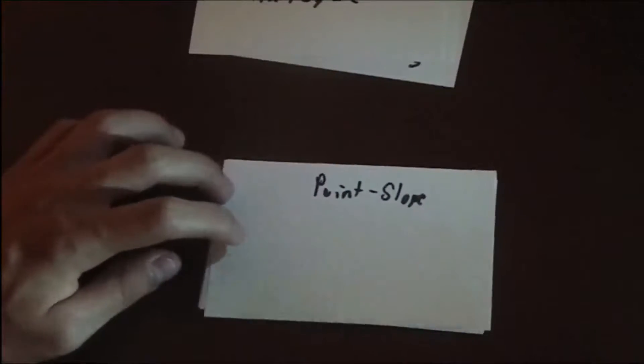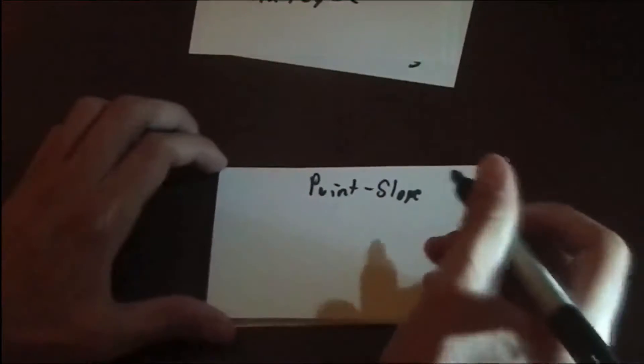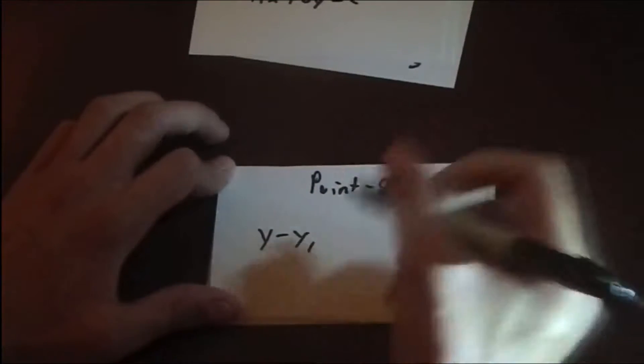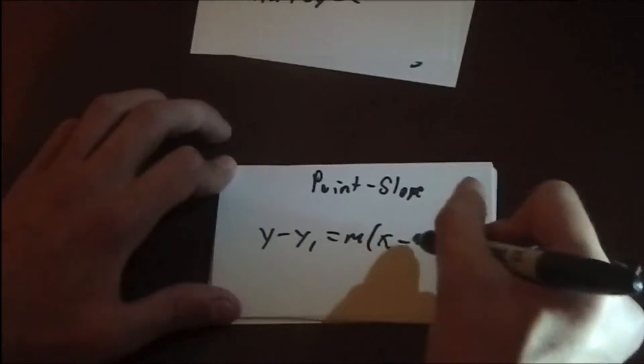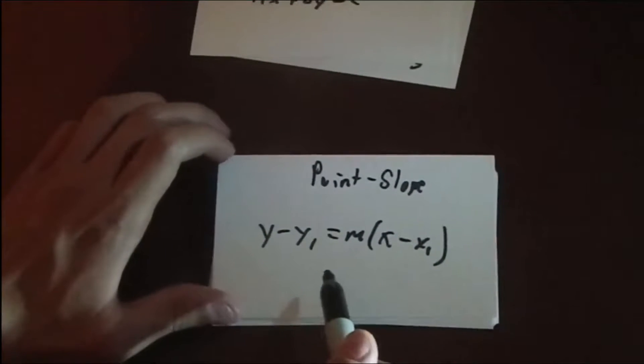I prefer this form over all the other ones because it has the most versatility for me. Point-slope form is y minus y1 equals m times x minus x1. And m is the slope again.